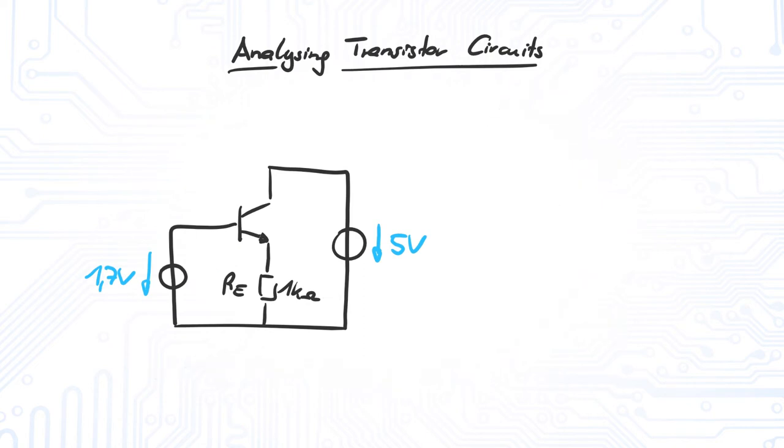Thus, we adjust our assumption and restart with the forward active region. In the forward active region, the collector emitter voltage is larger than the collector emitter saturation voltage. To solve the circuit now, we have to start at the base. Again, we get 1 volt for the resistor voltage. This means the collector emitter voltage has to be 4 volts. This is larger than the collector emitter saturation voltage and our assumption holds.